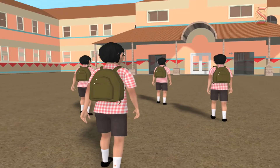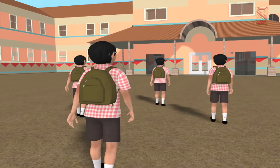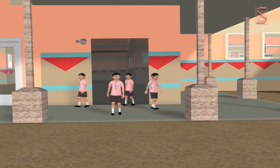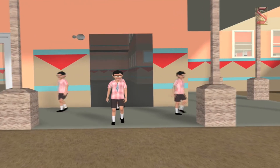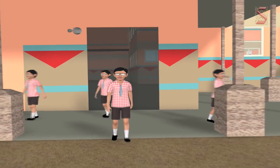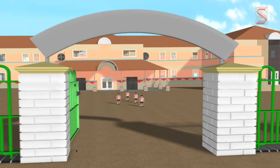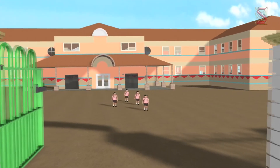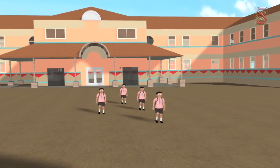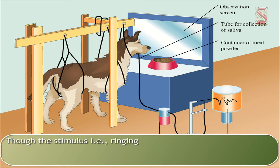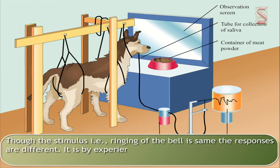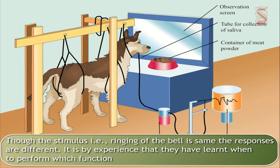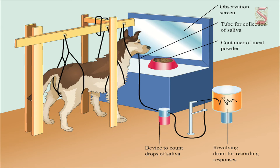The next bell rings and students go to their classrooms. At break time when the bell rings, students go out for snacks or to play. At the end of the day when the bell rings, students leave school to go home. Though the stimulus — the ringing of the bell — is the same, the responses are different. It is by experience that they have learned when to perform which function.